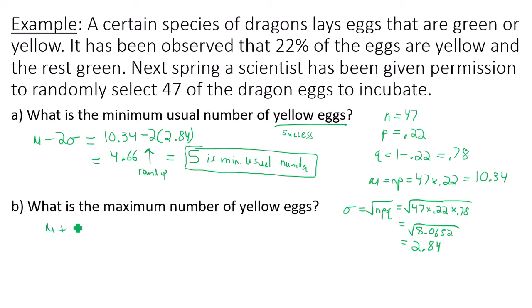Next. Maximum number of yellow eggs. Usual number of yellow eggs. So maximum usual number. I have 10.34 plus 2 times 2.84. Which I believe that's going to give you 16.02.